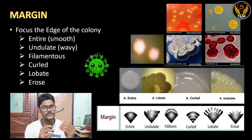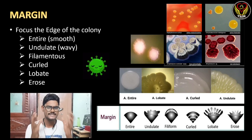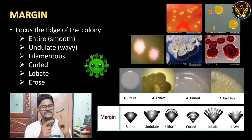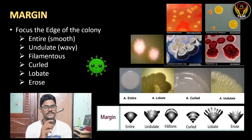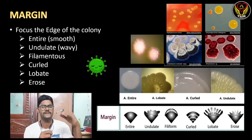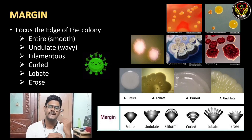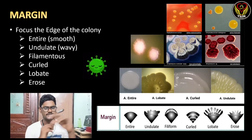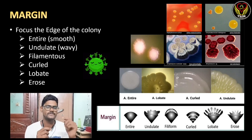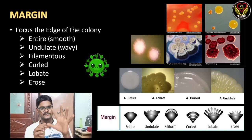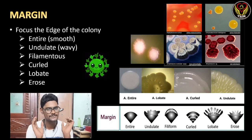For the margin of colony morphology, we focus on the edge of the colonies. There are six types of margin. First is entire, which is smooth and soft. Second is undulated, which is wavy. Third is filamentous, where the edges have thread-like expansion. Fourth is curled, where edges are curled. Fifth is lobate, forming different lobes. Sixth is erose, where the edges appear like spikes coming out.